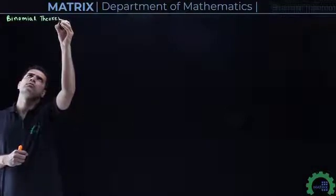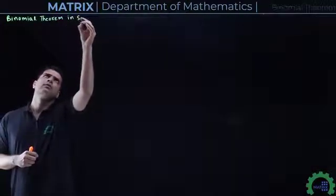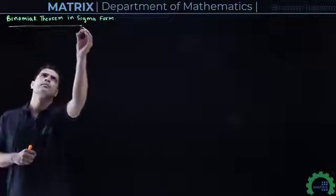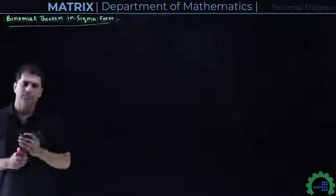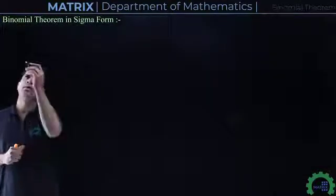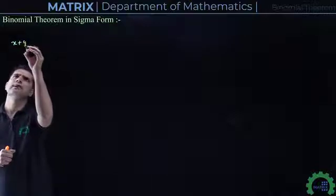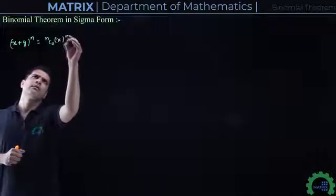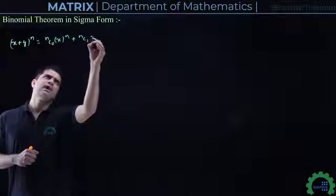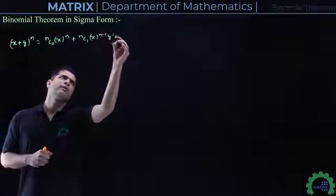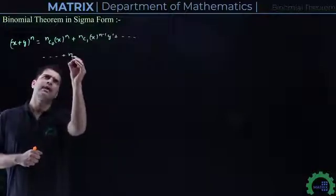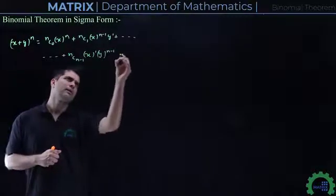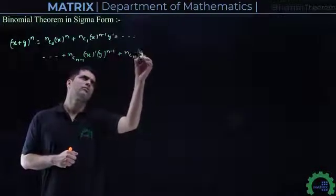Binomial Theorem in Sigma Form. First, from Newton's Binomial Theorem, we expand the binomial term (X + Y)^N. Its expansion was: NC0·X^N + NC1·X^(N-1)·Y^1 + ... + NC(N-1)·X^1·Y^(N-1) + NCN·Y^N.